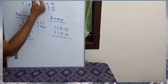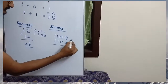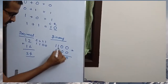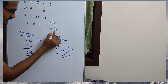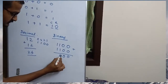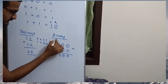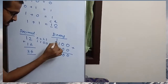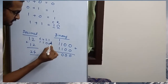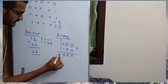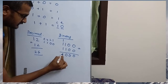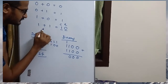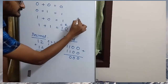Binary Addition: 0 plus 0 is 0. Then 1 plus 1 gives a carry. So that is another value — when you get 1 plus 1 plus 1, the result is going to be 1 with a carry, giving 11001.